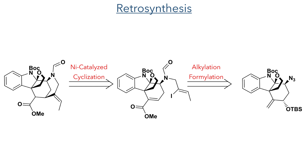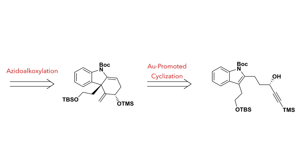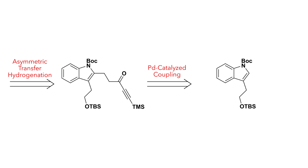The final cyclisation could be accomplished using a nickel-catalyzed reaction of a functionalised amine, which could be generated from the reduction, alkylation and formylation of an azide group. This azide could be installed in the same step as a cyclisation using an azidoalkoxylation reaction of a tricyclic intermediate, which in turn could be generated using a gold-promoted cyclisation of a functionalised indole. The chiral hydroxyl group, which guides the stereochemistry for the entire synthesis, would be generated using an asymmetric transfer hydrogenation of an alkynyl ketone, which would be installed using a palladium-catalyzed coupling on the indole starting material.